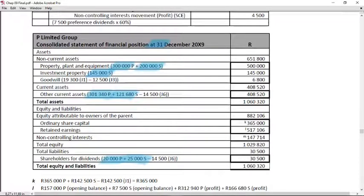Something I want to point out is this 14,500 elimination coming from journal 6. Go back to journal 6, see what we did there. We said debit shareholders for dividends, credit dividends receivable. The effect of that consolidation journal entry on the line item is to eliminate the 14,500 from the other current assets of the parent and the 14,500 from the shareholders for dividends from the subsidiary.